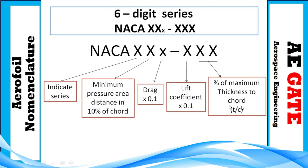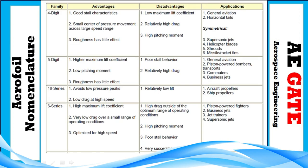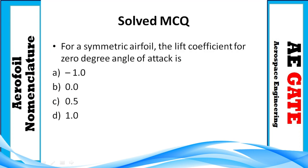For advantages, disadvantages, and applications: for helicopter blades, we use the four-digit series — specifically NACA 0012 — because of its good stall characteristics. For missile and rocket fins, we also use the four-digit series. The five-digit series is used in business jets, piston engines, and general aviation. The six-series is used especially for supersonic jets where high lift is required.